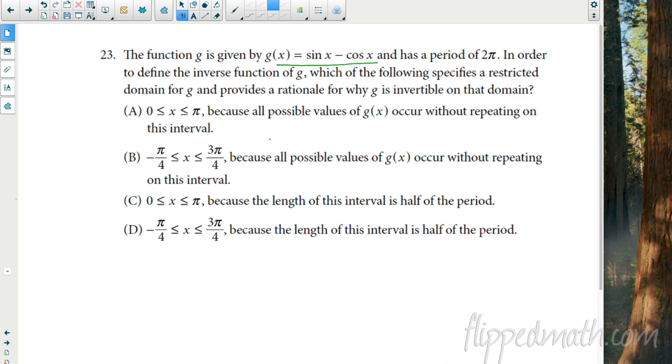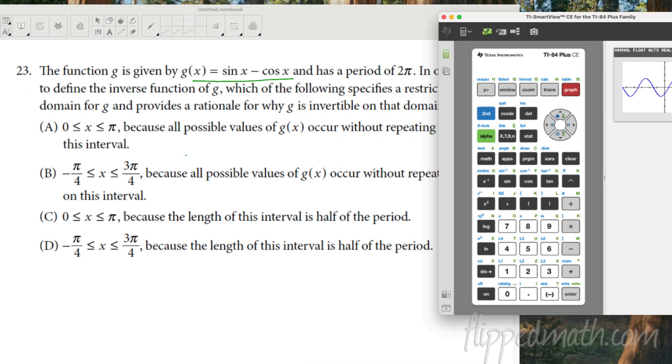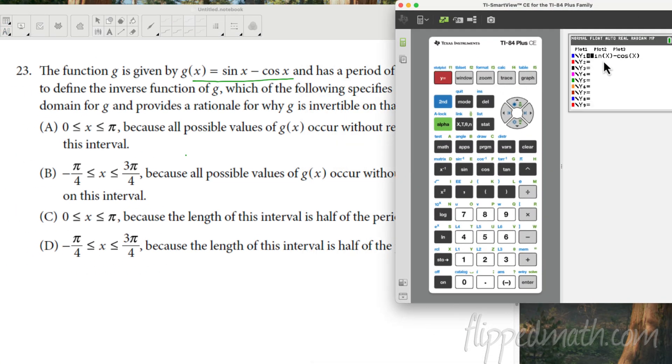So let's put this in our calculator. Where did my calculator go? I lost my calculator. Oh, there it is. Sorry, people. So I put it in right here. Look, sine of X minus cosine X. Make sure I'm in radians. I go, I look at the graph. Okay. It looks like this. Here's the thing. If you're going to restrict the domain of the inverse, then you have to look at the range of the function.